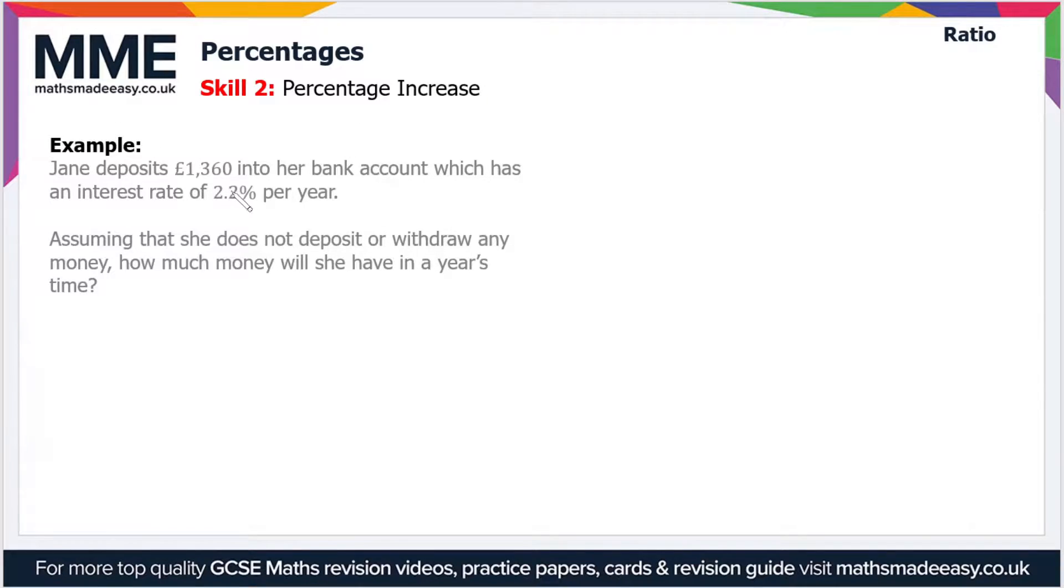Jane deposits £1,360 into her bank account which has an interest rate of 2.2% per year. Assuming that she does not deposit or withdraw any money, how much money will she have in a year's time?